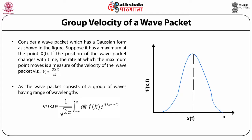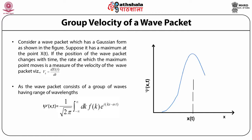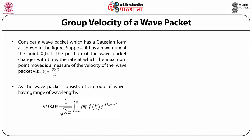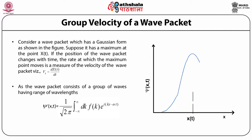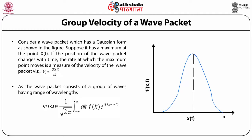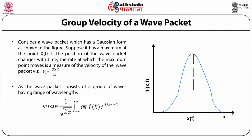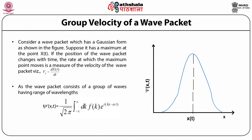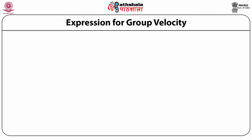As the wave packet consists of a group of waves having a range of wavelengths, we write the wave function as psi(X, t) = 1/sqrt(2pi) × integral from -∞ to +∞ of f(k) e^(i(kx - omega·t)) dk. In this expression f(k) is the Fourier transform with respect to the wave vector k, which is associated with the particular wave packet.